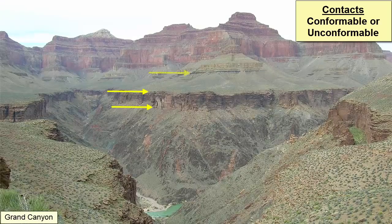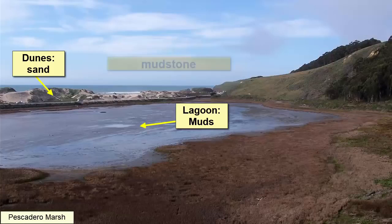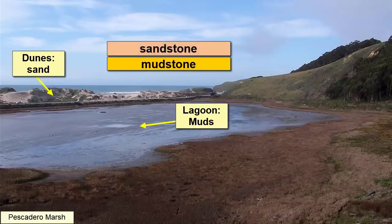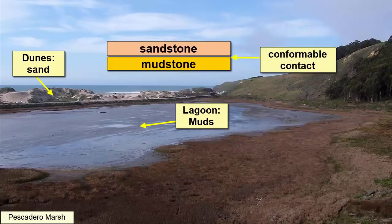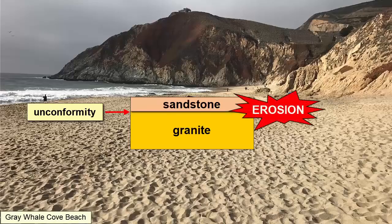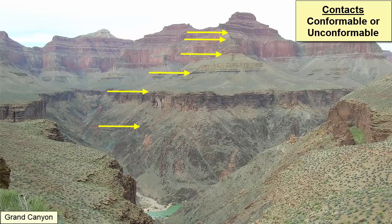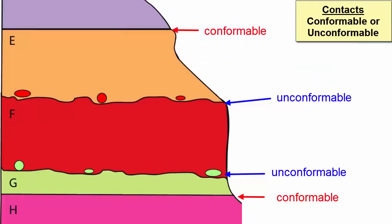Looking more closely at contacts between rock layers: usually these are conformable, meaning rocks on both sides of the contact formed at about the same time, but in between the environment changed. For example, a mudstone might represent muds depositing in a lagoon, but eventually nearby sand dunes migrate and cover the lagoon, so sands deposit on top of the muds. An unconformity is a contact between two layers that represents a pause in deposition or when an area has been uplifted and eroded. We can identify an unconformable contact when we see evidence of erosion such as an irregular surface, excavation, or inclusions of rocks below the contact into the rocks above.